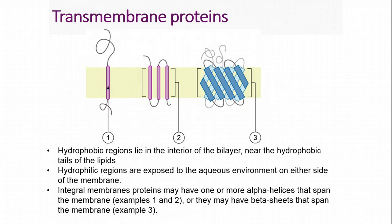When we say transmembrane protein, we're talking about a protein that exists both inside and outside of the membrane. We have both hydrophobic and hydrophilic regions of our proteins. The hydrophobic regions of the proteins lie on the inside of the bilayer because the inside of the bilayer is hydrophobic. This part of the protein is hydrophobic because of the R groups on the amino acids — some R groups are hydrophobic and some are hydrophilic. There are also hydrophilic regions exposed to aqueous environments, either on the outside or inside of the cell.